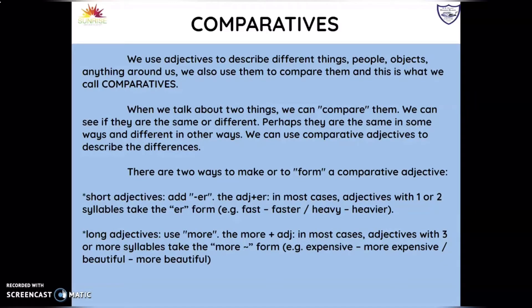We also use those adjectives to compare things. That's what a comparative is — when we talk about two things that we can compare, we can say if they're the same, if they're different, or even if someone has a quality that the other doesn't have.